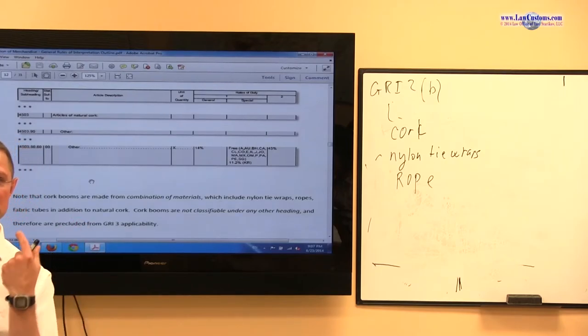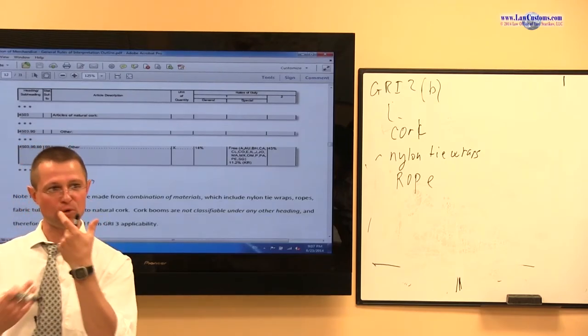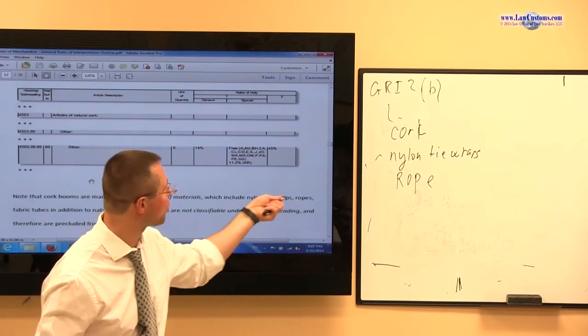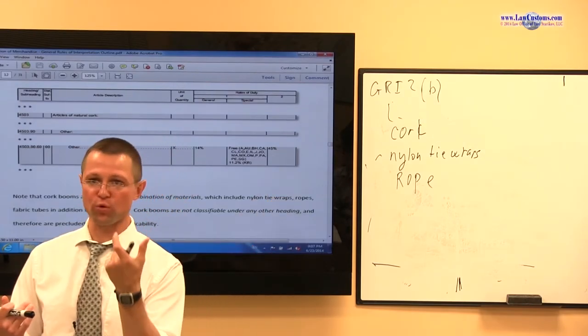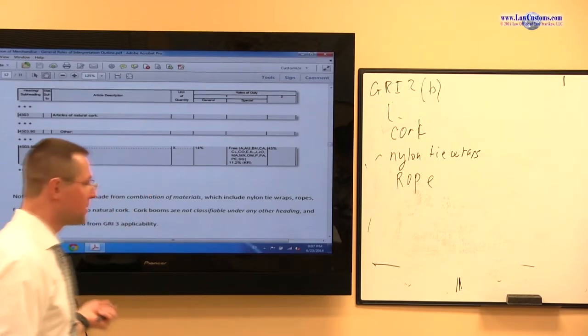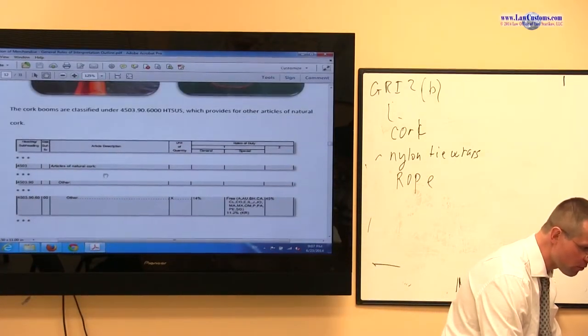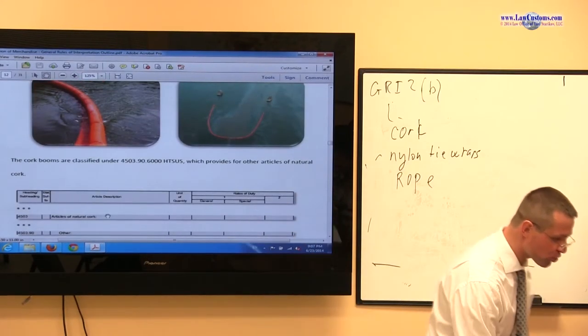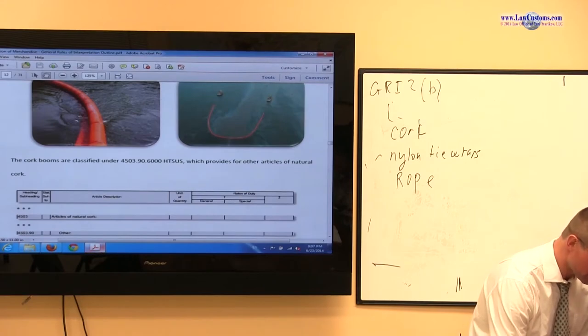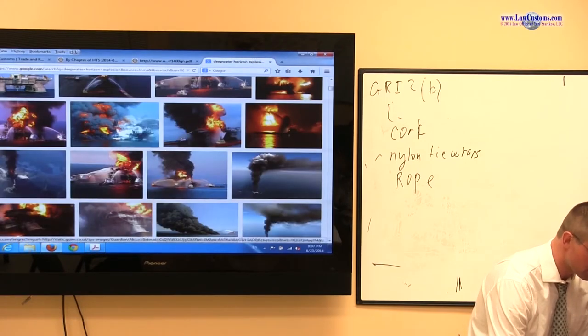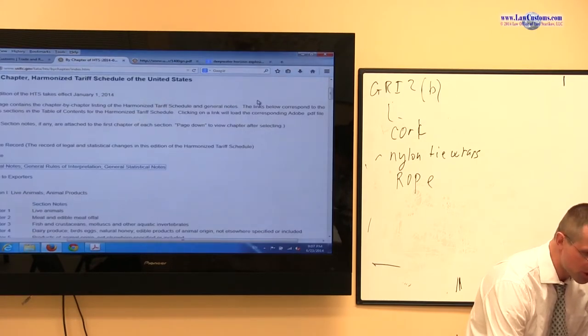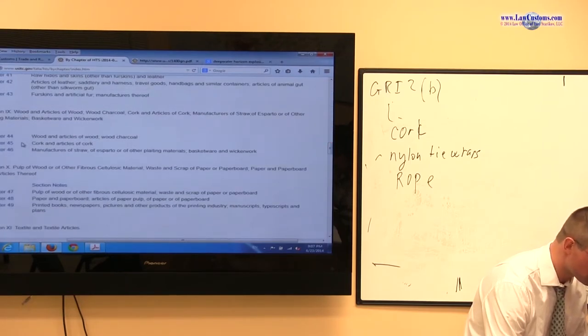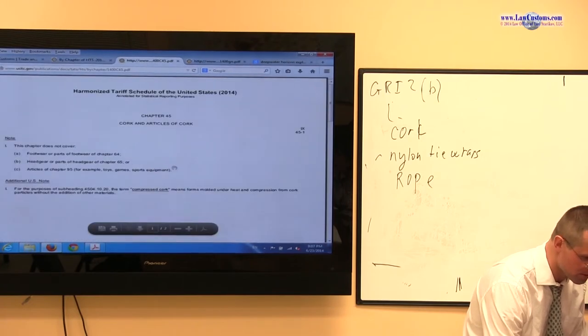So the reason is, if it's classifiable in two or more headings, it automatically falls out. Because it can only be classifiable as article of cork. Because cork forms the core. And because cork forms the core, customs examiners reasoned that chapter 45, which provides for cork, is the only chapter which fits the provided product description.